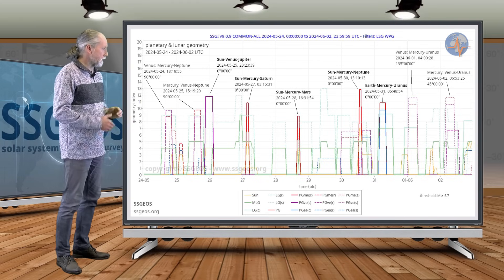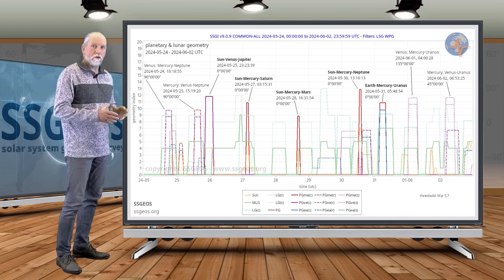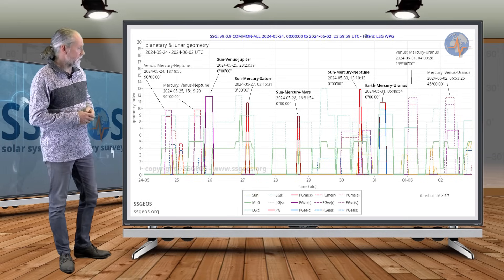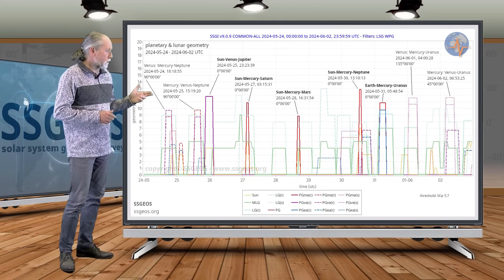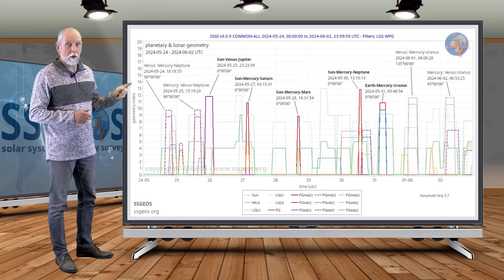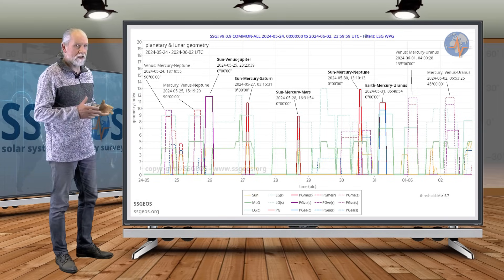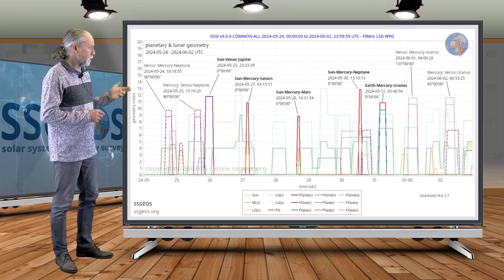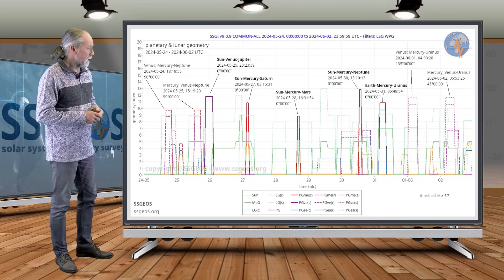That is the planetary geometry very much that we're going to have up until the 2nd of June. We also see Venus, Mercury, and Uranus coming up, but that's not right angle geometry. That is semi-right angle geometry, 135 degrees and 45 degrees geometry.